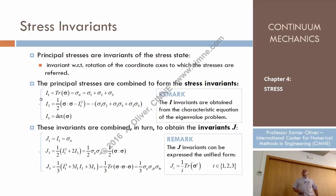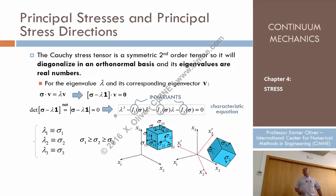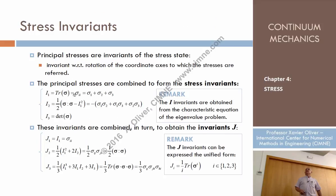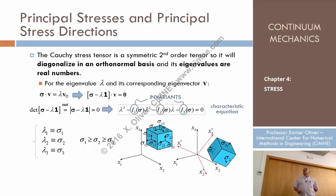What are those invariants? You could derive them yourself if you are curious — just expand the determinant. The coefficient multiplying lambda squared will turn out to be the trace of the stress tensor, which is σ11 + σ22 + σ33.